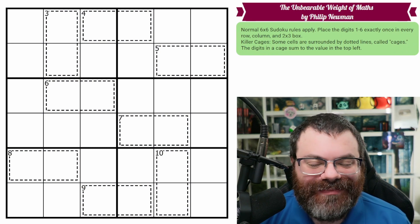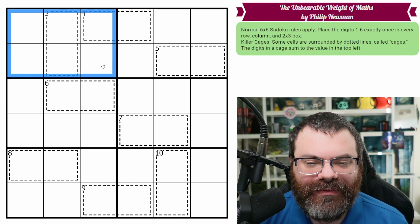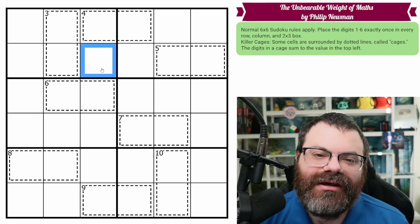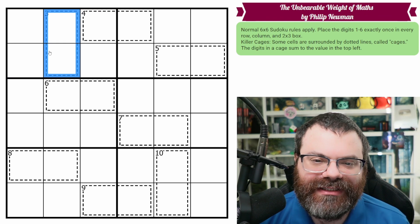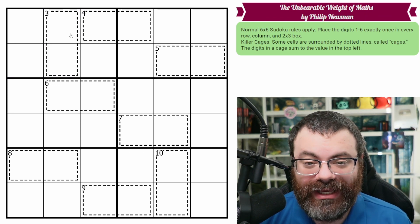So we have normal 6x6 Sudoku rules. That means in every row, every column, and every 2x3 box, we are placing the digits 1 to 6 exactly once each. Let's have these killer cages in the grid, that's these cells surrounded by dotted lines, with a clue on the top left.